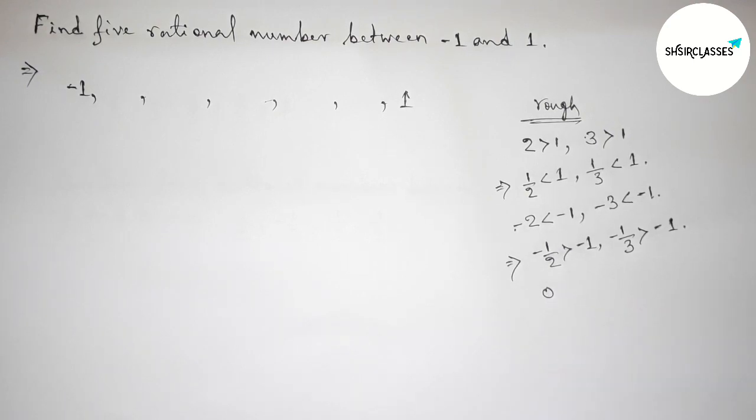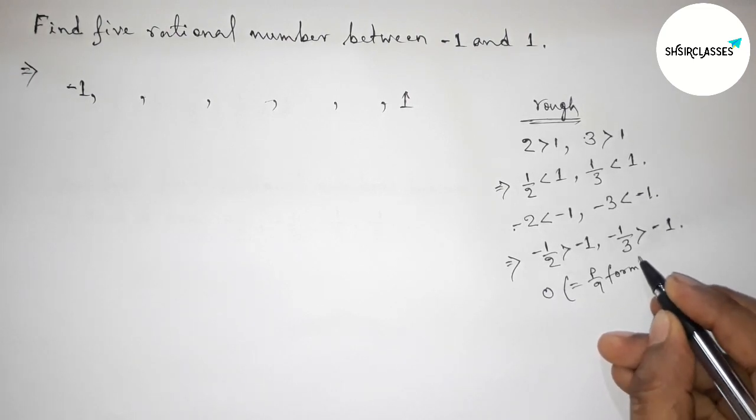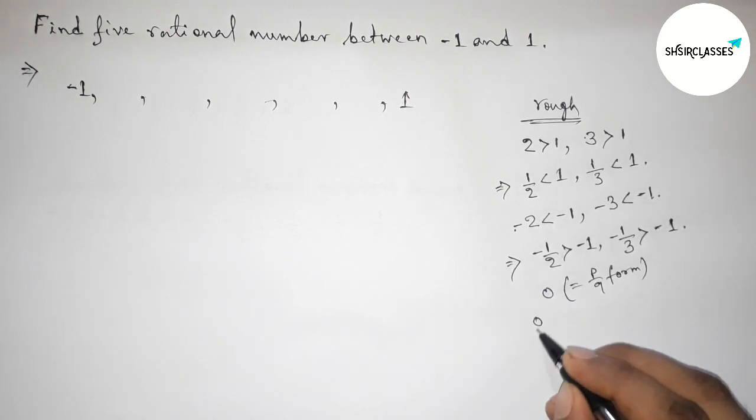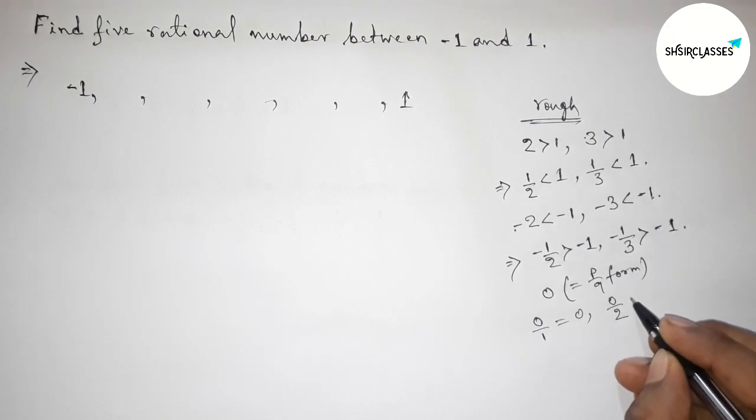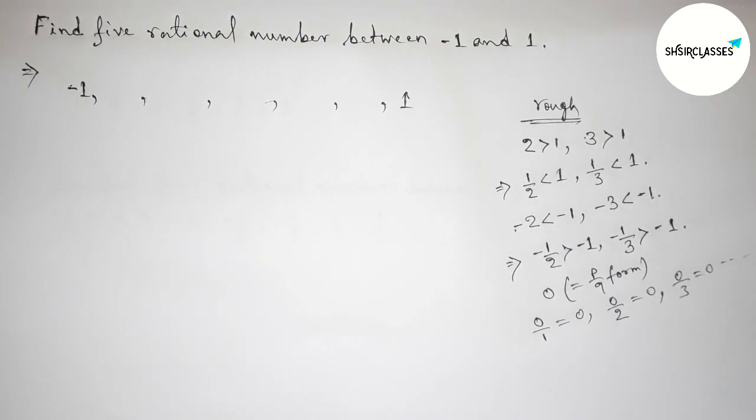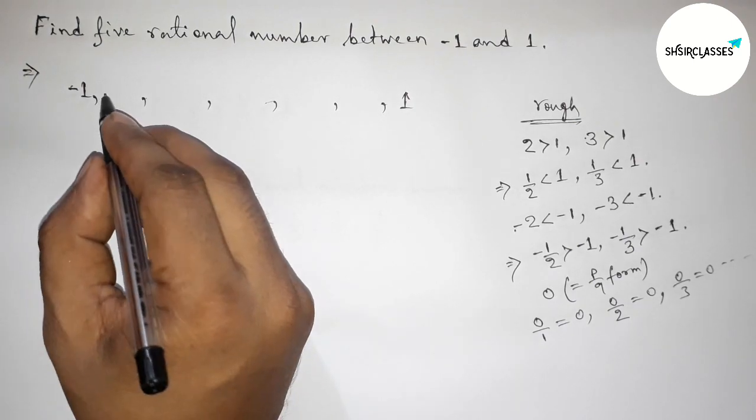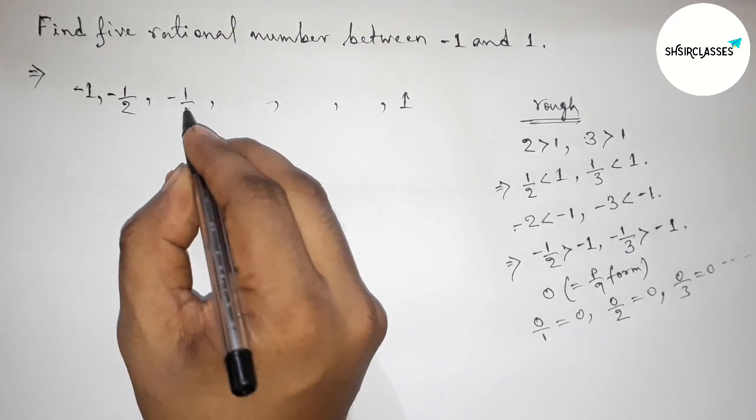Okay, and here we can take zero as a rational number because we can express zero as a p by q form like zero by one, that is zero. Zero by two equals to zero. Zero by three equals to zero, so continuous. So here, zero is a rational number. So first write down here all the rational numbers.